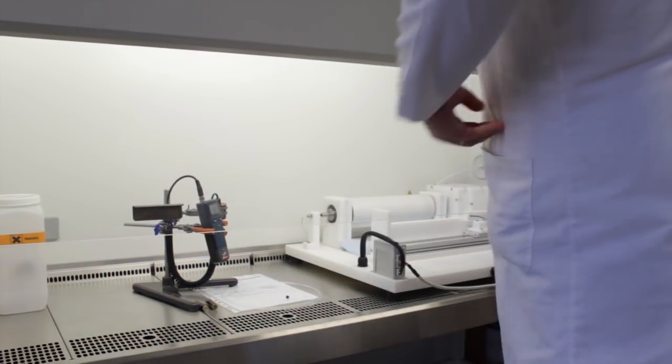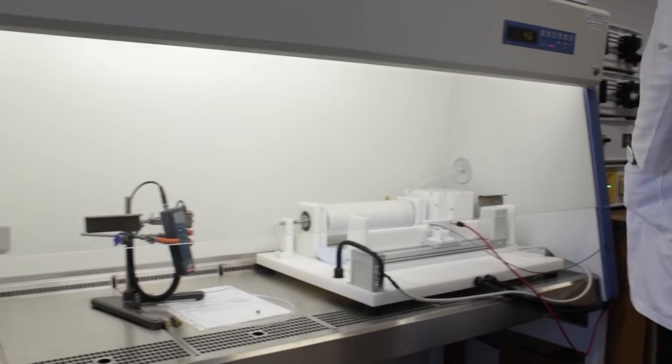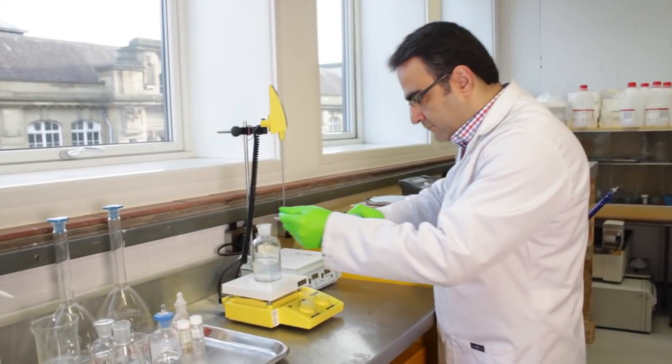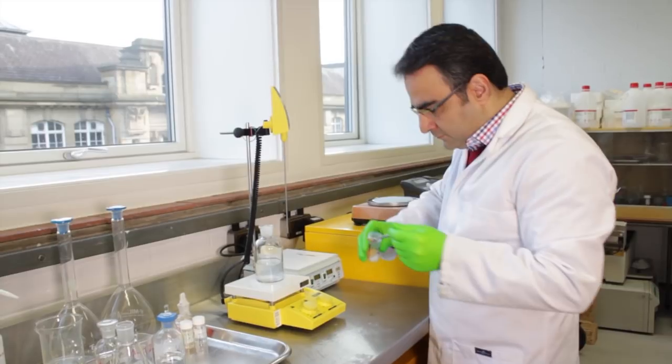Electrospinning is a process which enables us to produce micro and nanofibers. Polymer solution was prepared by adding polymer to suitable solvent.